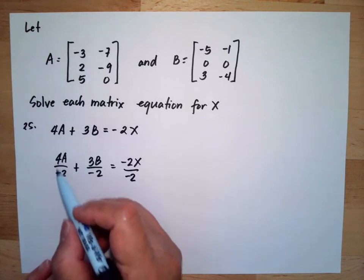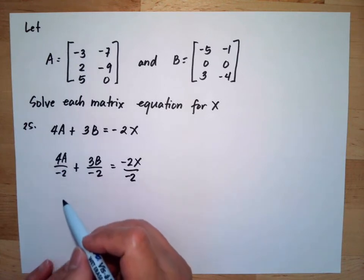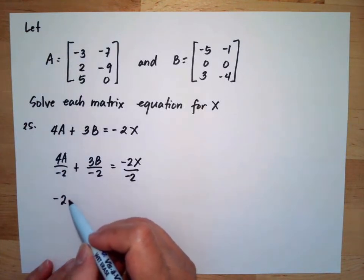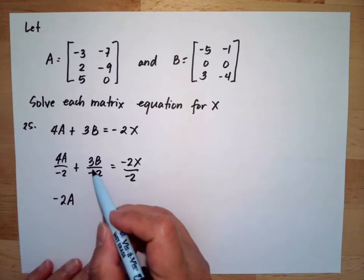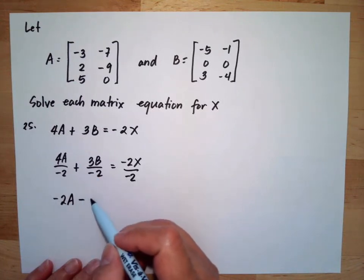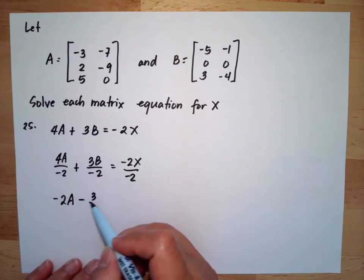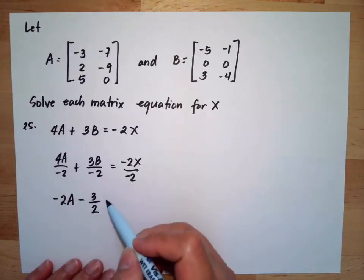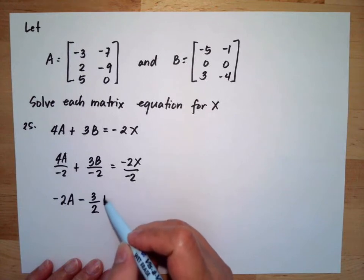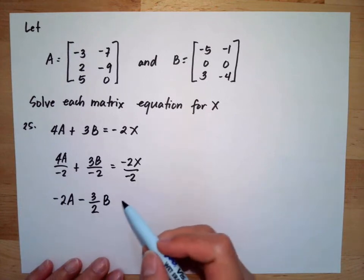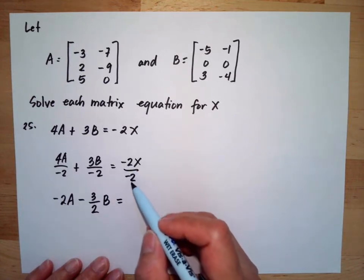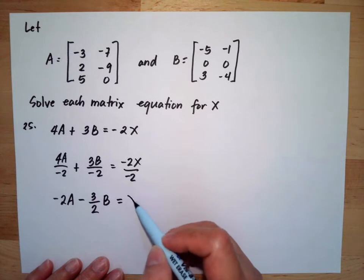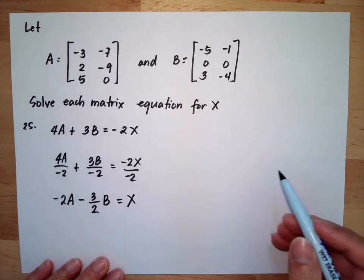So 4 divided by negative 2 equals negative 2, giving us negative 2A minus 3 halves B. And negative 2 over negative 2 gives us X.